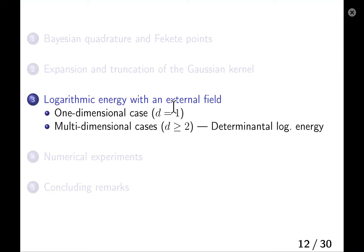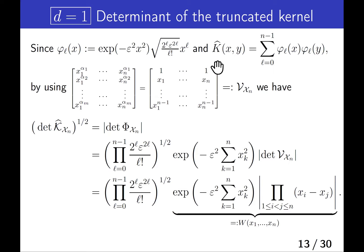By using this truncated Gaussian kernel, we can approximately reduce the fekete points problem to an optimization problem of a logarithmic energy with an external field. Now let us begin with the one-dimensional case. Here, we use the truncated kernel with n basis functions, where n is the number of nodes. The multidimensional Vandermonde matrix becomes the usual Vandermonde matrix, and we have this expression for the determinant of the truncated kernel. Since we can neglect the constant factor, we focus on the part denoted by W, and we maximize this value to obtain approximate fekete points.